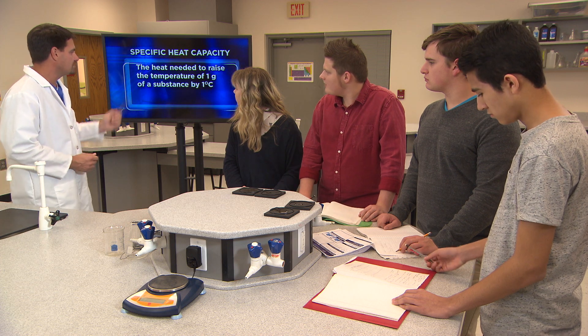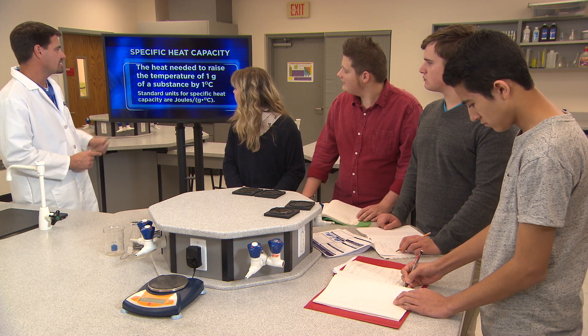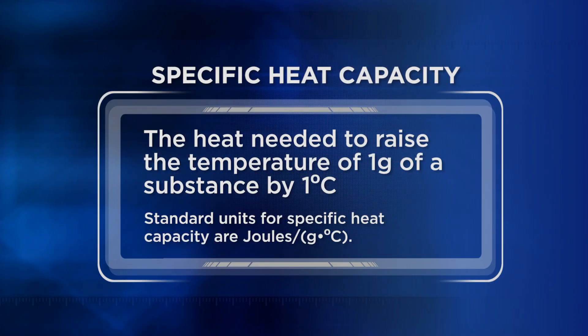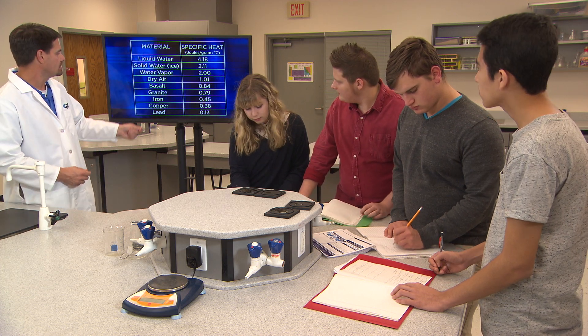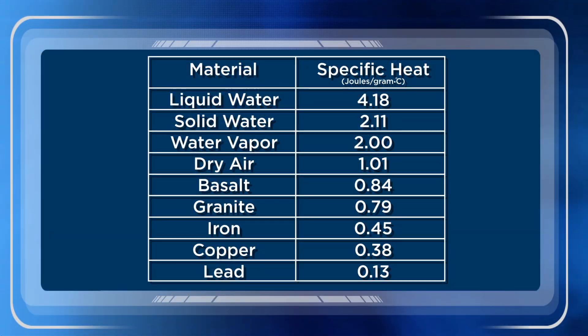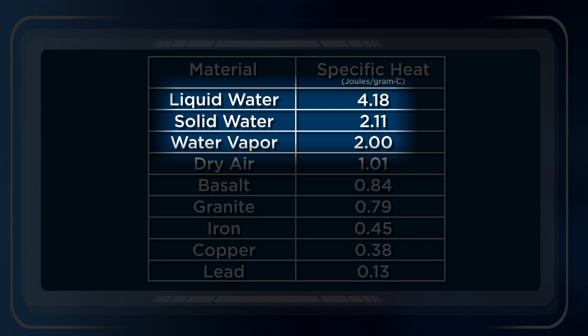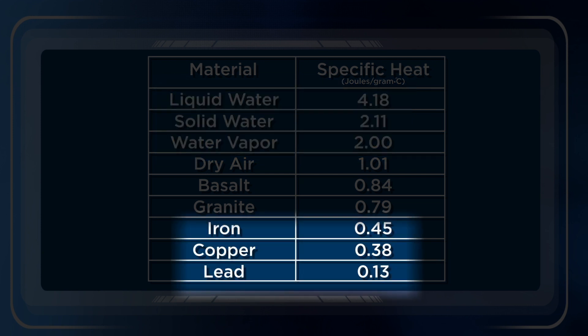Specifically, the heat needed to raise the temperature of one gram of a substance by one degree Celsius is the specific heat capacity. The standard units for specific heat capacity are joules per gram degrees Celsius. Substances with a low specific heat capacity are more sensitive to changes in temperature, like the metals here at the bottom. Substances with a higher specific heat capacity are more resistant to changes in temperature. Water, for example, has a very high specific heat capacity and so it's quite resistant to changes in temperature. Look at the metals and how low their specific heat capacities are.